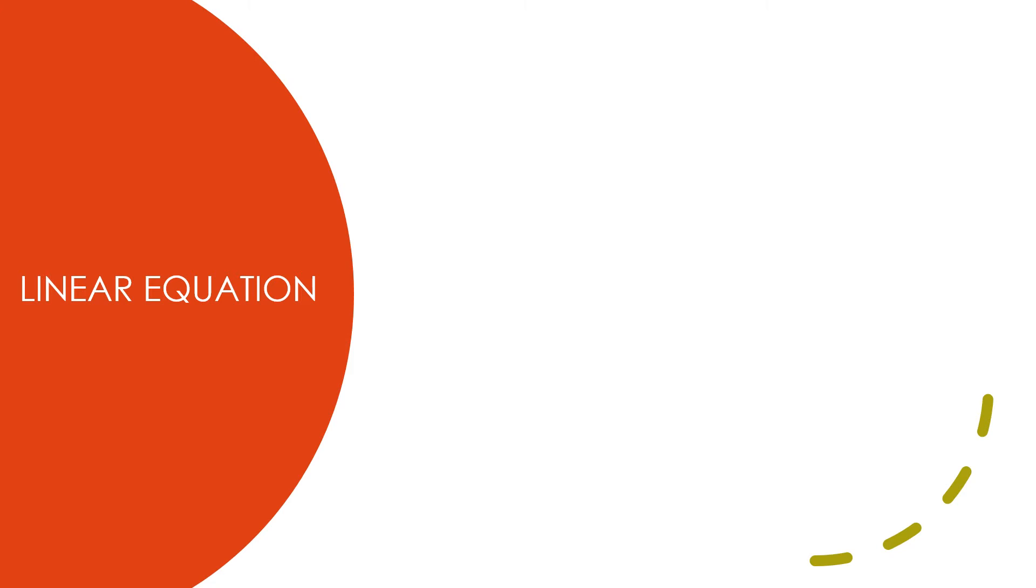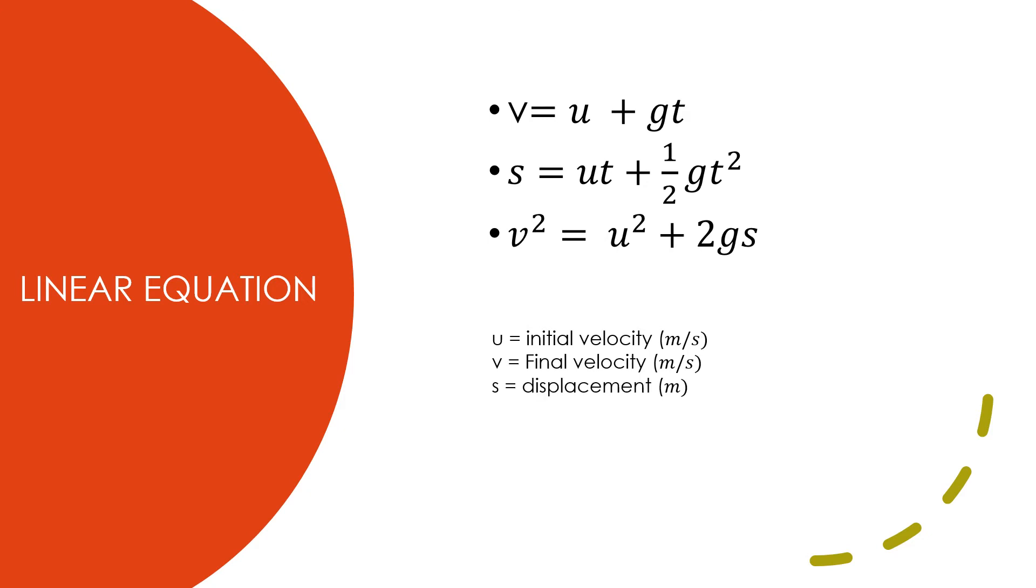You are going to need some formulae to solve our free-fall problems. The first linear equation is v = u + gt. Second, s = ut + (1/2)gt². And third, v² = u² + 2gs. Where u is initial velocity, v is the final velocity, s is the displacement, t is time taken, and g is gravitational acceleration.